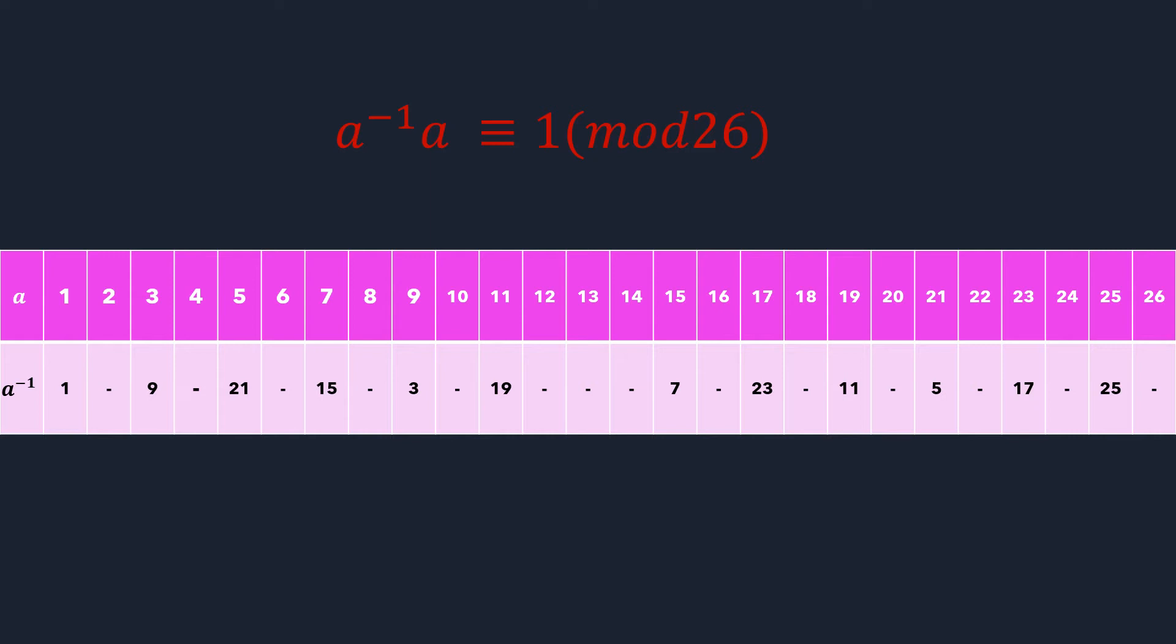the inverses of these numbers can be obtained. For some numbers like 2, 4, 6, 8, we don't have any inverses. But for 1, 1 is the inverse; for 3, 9 is the inverse; and for 5, 21 is the inverse. For 25, 25 itself is the inverse.